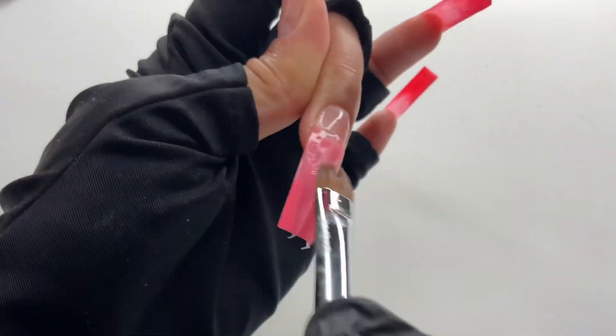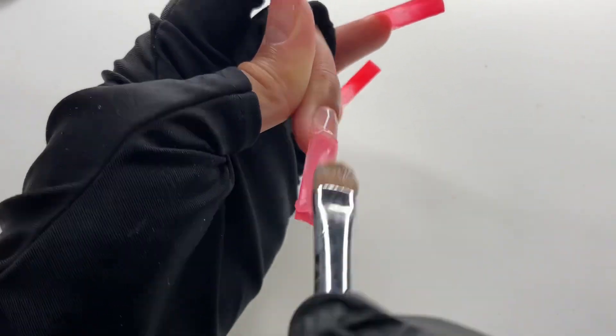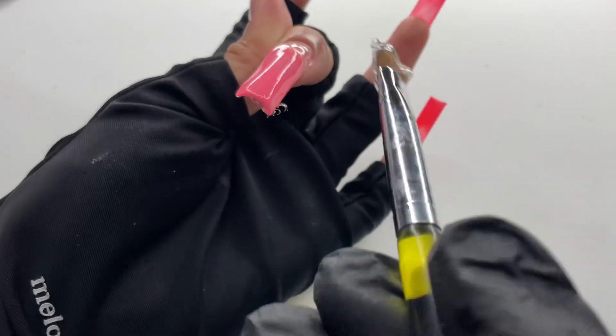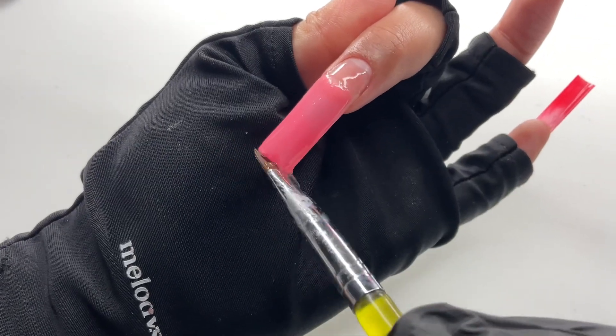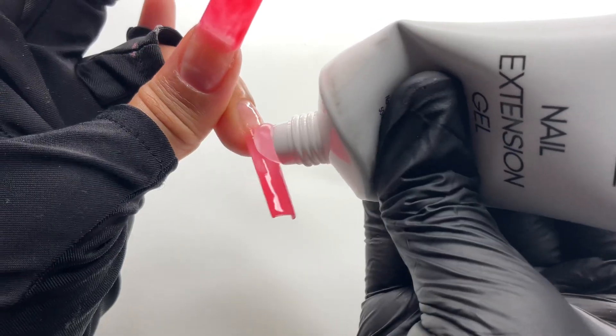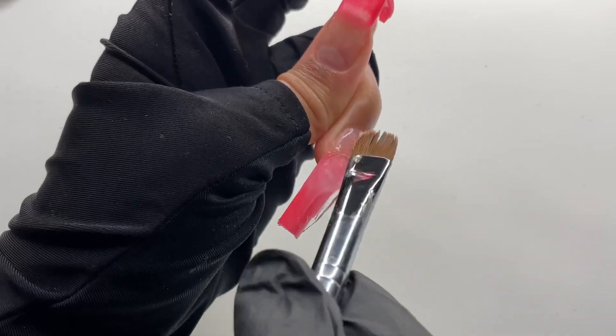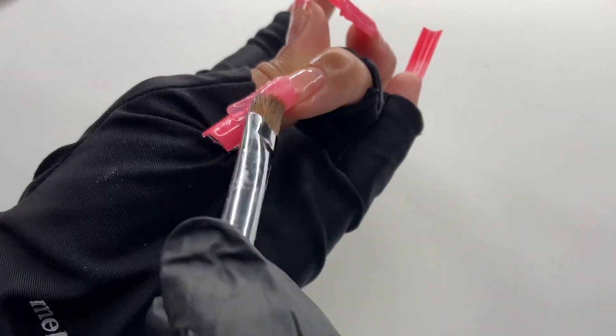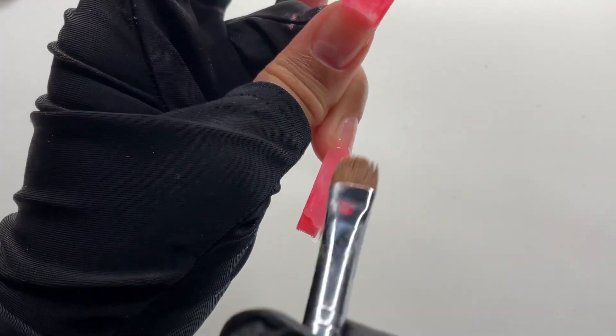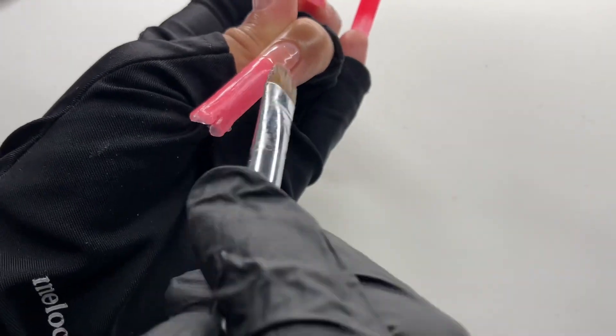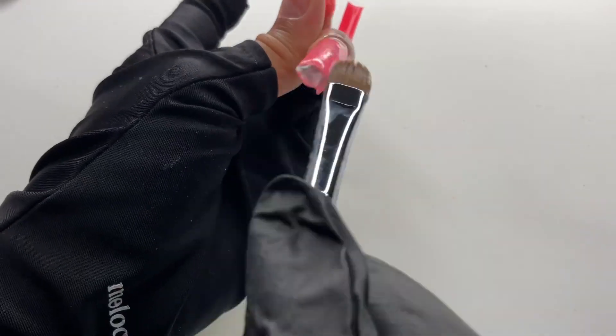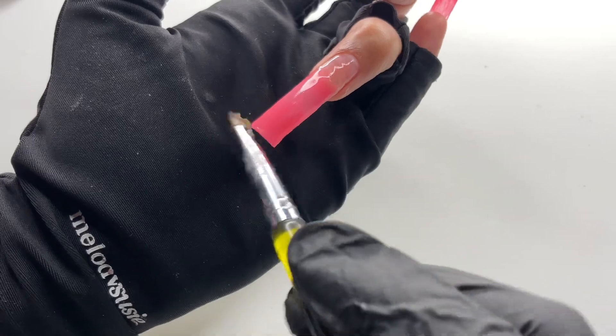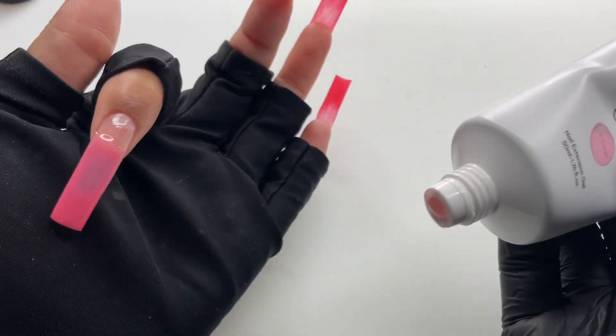Again, just putting a thin layer down, removing any excess product, and tapping the free edge because we want to keep that square shape as much as possible. This is basically the first step to building the structure of the nail. These are a pretty good length, so we're gonna have to go in with more polygel to build the apex and so forth. I just like to do this tapping motion here to keep the free edge square and remove any excess product.